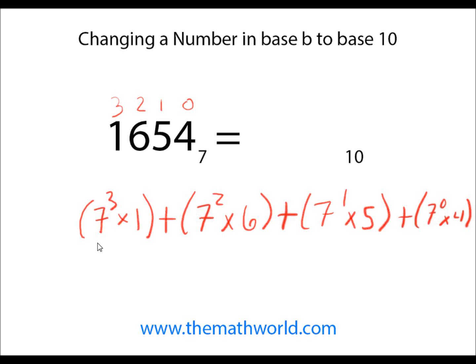7 times 7 is 49, times 7 is 343. 343 plus 7 times 7 is 49 again. 49 times 6 is 294. 7 to the first power is 7, times 5 is 35, so we'll add 35.